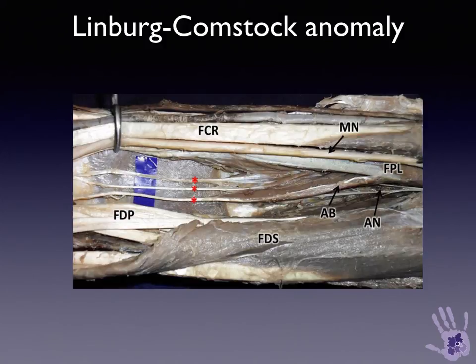A number of different anomalies have been identified, including a shared muscle belly between FPL and FDP to the index, accessory tendon slips running between the two tendons, or just chronic tenosynovial proliferation encasing those tendons.